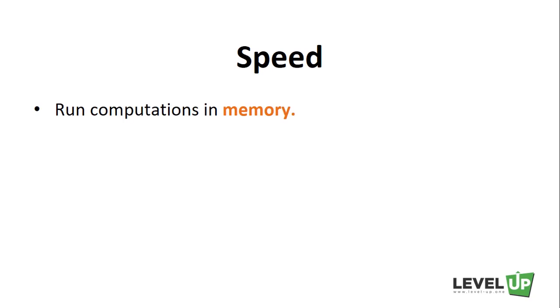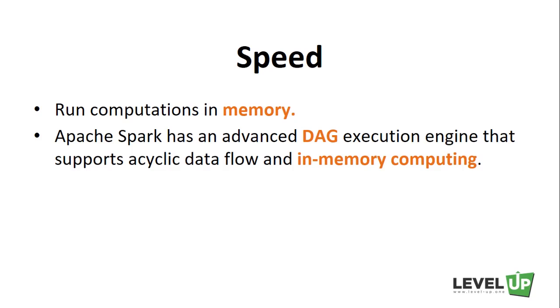Speed is a very critical aspect in processing large datasets, as it means the difference between exploring data interactively and waiting minutes or hours. One of the main advantages of Spark regarding speed is its ability to run computations in memory. Apache Spark has an advanced DAG execution engine that supports acyclic data flow and in-memory computing. Spark enables applications in Hadoop clusters to run up to 100 times faster in memory and 10 times faster even when running on disk.